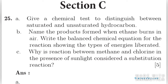The first question asks you to give a chemical test to distinguish between saturated and unsaturated hydrocarbons. You can make use of bromine water — take two test tubes, put saturated hydrocarbon in one and unsaturated hydrocarbon in another, and add bromine water. The one which discharges the color of bromine water is the unsaturated hydrocarbon. Unsaturated hydrocarbons always discharge the color of bromine water; saturated ones never do.